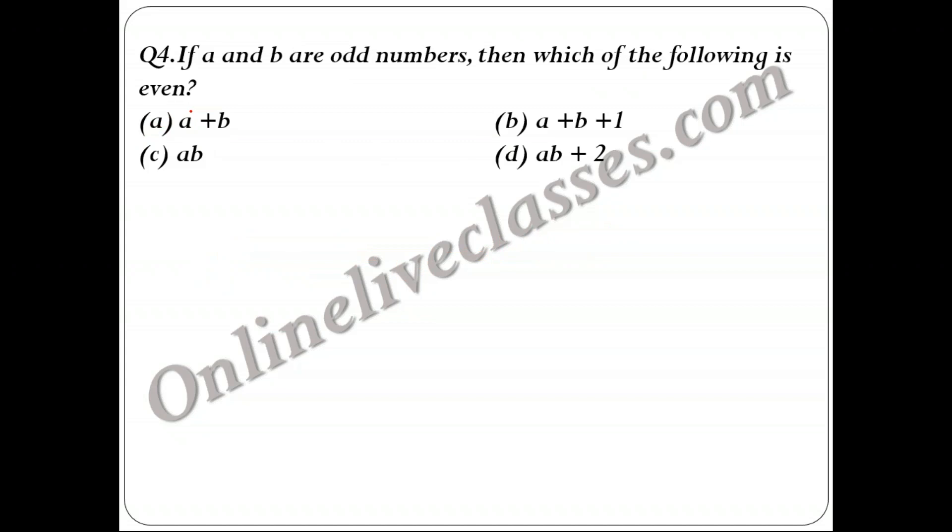Moving on to the next question: if a and b are odd numbers, but here whether odd is positive or negative is not mentioned, then which of the following will be even? We need to find which option is even. So let us try with simple numbers. Let a = 1 and b = 3, because a and b are both odd. Option 1 would be 1 + 3, that is 4, so that is even, yes.